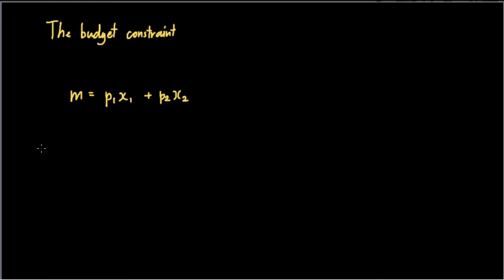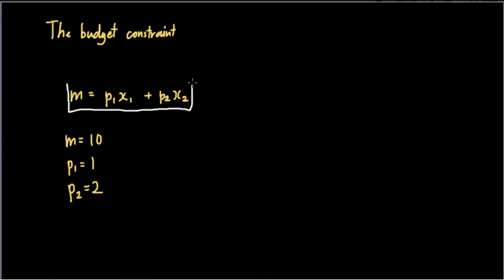We want to find all possible combinations that would exhaust the budget of the consumer. Let's use this example where the budget of the consumer, M, is equal to 10. The price of good one would be equal to one, and the price of good two would be equal to two. So this function here will now be: 10 is equal to one times x sub one plus two times x sub two.